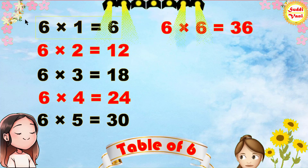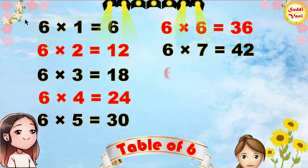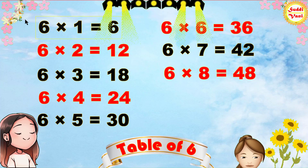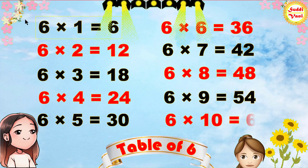6 7s are 42, 6 8s are 48, 6 9s are 54, 6 10s are 60.